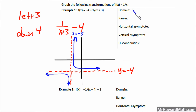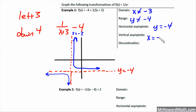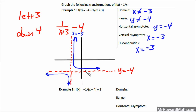The domain is x cannot equal negative 3, because the vertical asymptote prevents it from reaching that x-value. The range is y cannot equal negative 4 because of the horizontal asymptote. The vertical asymptote is at x equals negative 3 and the horizontal asymptote is at y equals negative 4. Discontinuities occur at x equals negative 3 — you have to pick your pencil up at that value when sketching. Everywhere there is a vertical asymptote, the function is also discontinuous there.